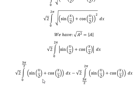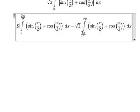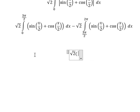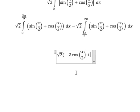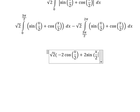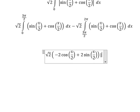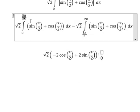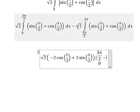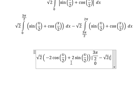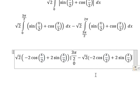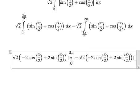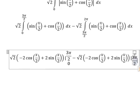Now we can find the final answer. The integration of sine of S over 2 gives negative 2 cosine of S over 2. The next one is about positive. And we put the bounds from 0 to π over 2. Minus this one — so this one is similar — and we put the bounds from 3π over 2 to 2π here.